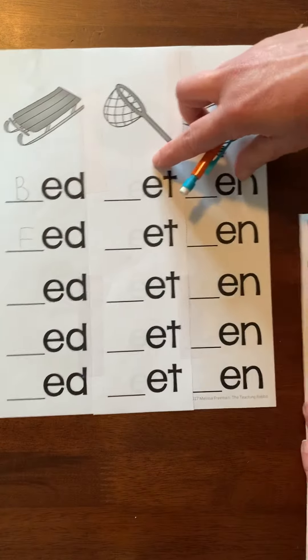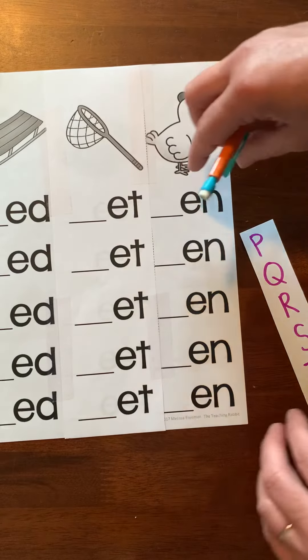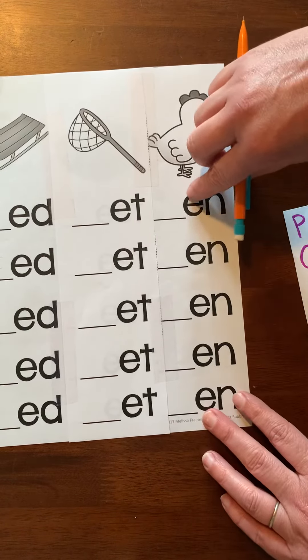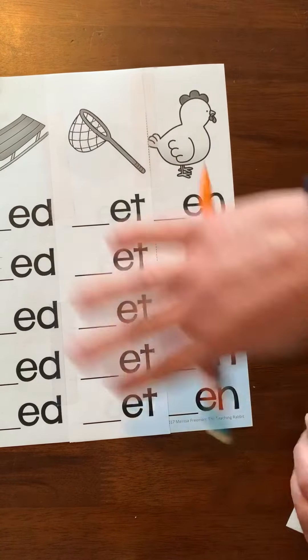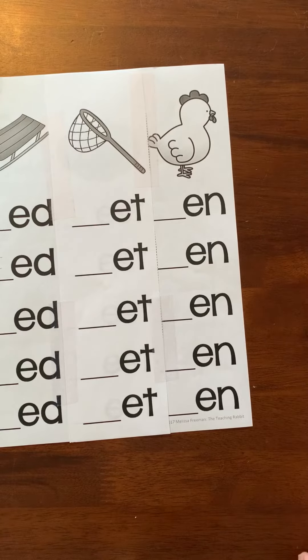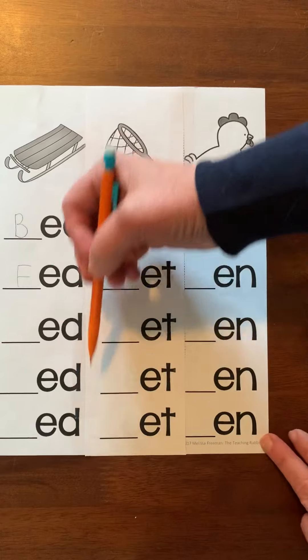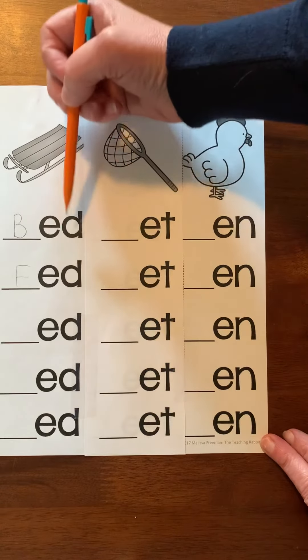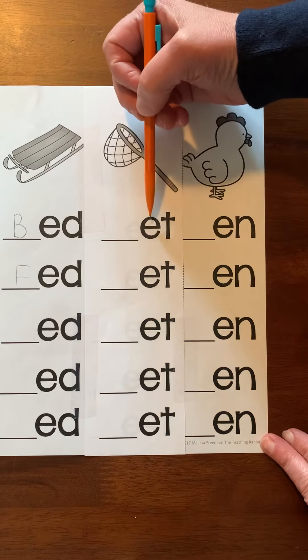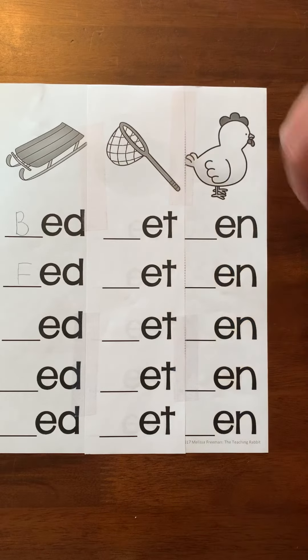And then you're going to go over to -et and do the same thing, and -en, and do the same thing. See how many words you can make with these baby E families. This is the E-D family, -ed; E-T, -et; and E-N, -en.